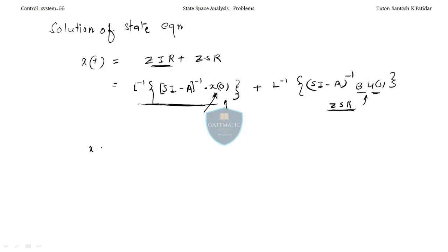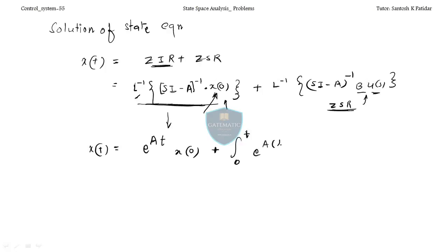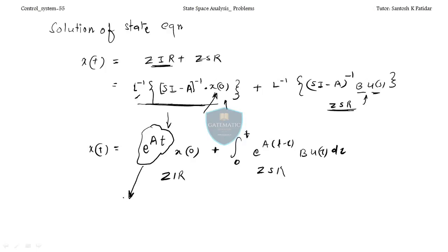In the classical method, we have seen this same thing. The classical method means we are converting into the time domain. When you take the L⁻¹, what you get is e^(At)·x₀ plus the integral from 0 to t of e^(A(t−τ)) · B · u(τ) dτ. In the zero input response part, this term here is nothing but the state transition matrix.